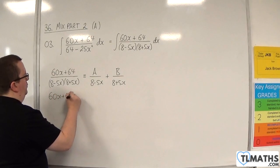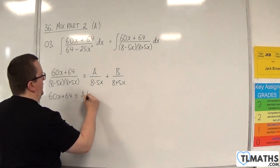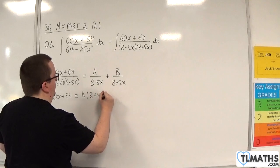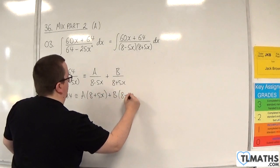So 60x plus 64 is going to be equivalent to A lots of 8 plus 5x plus B lots of 8 take away 5x.